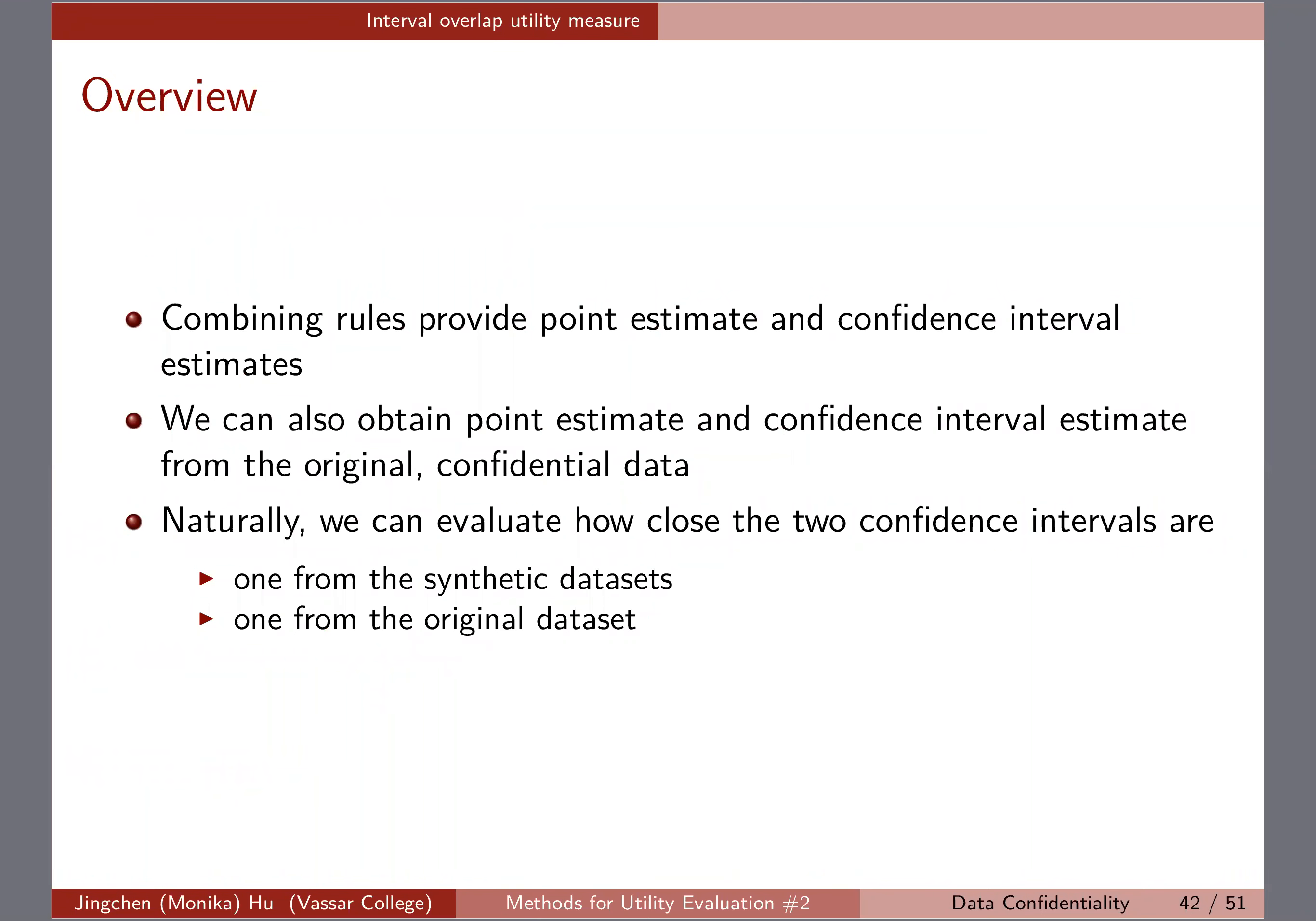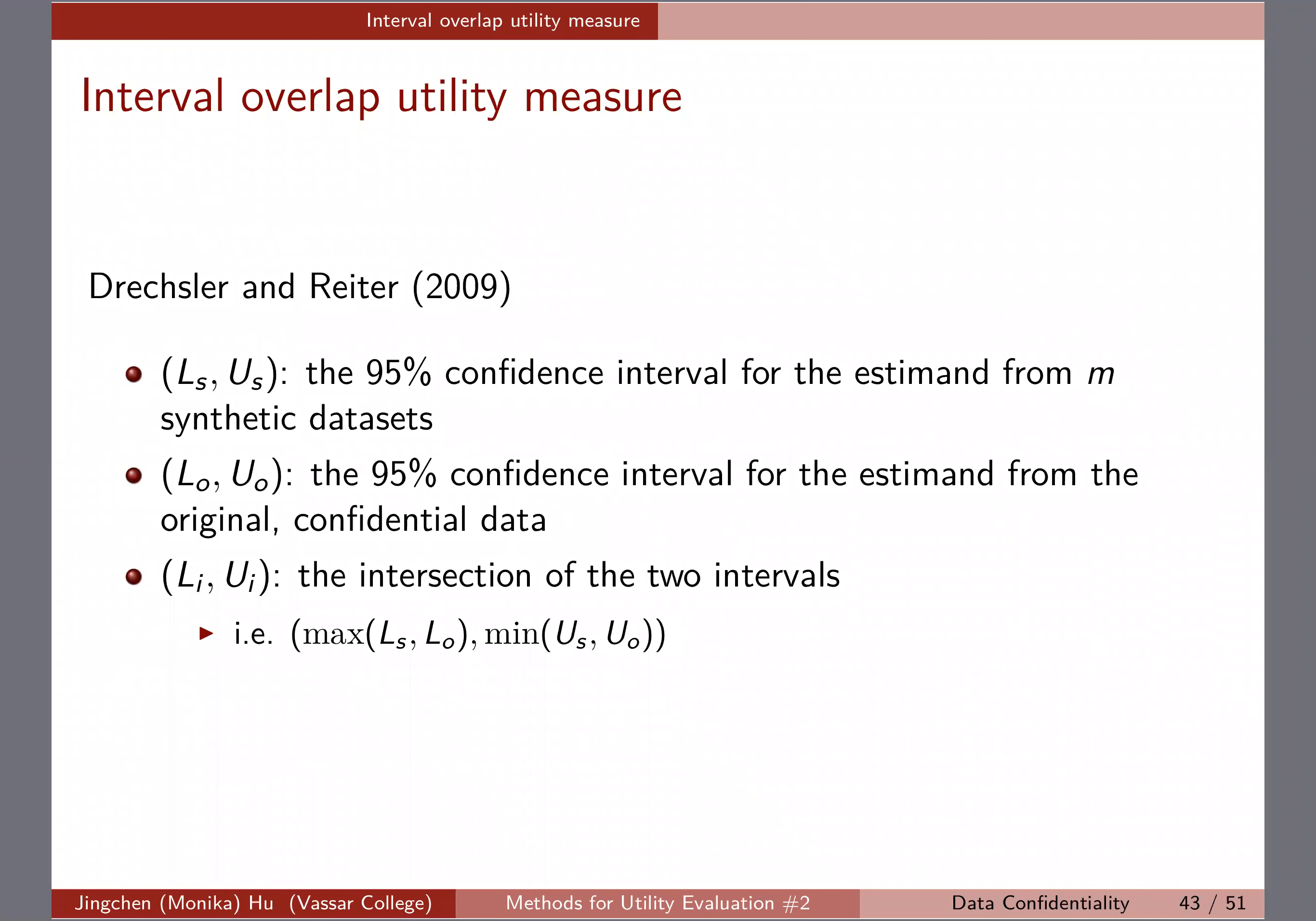The two confidence intervals return a few measures, and then in the end we're able to do that. So let's suppose L_s and U_s, that is the lower and upper bounds from the synthetic data, so that's why we have the subscript s. And then L_o and U_o are from the original confidential data.